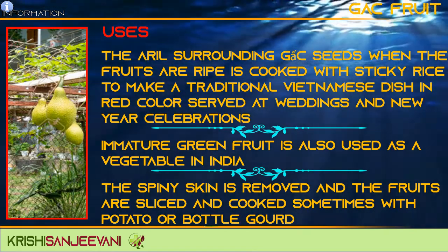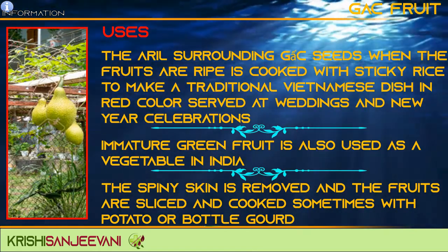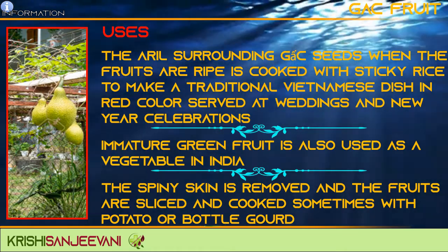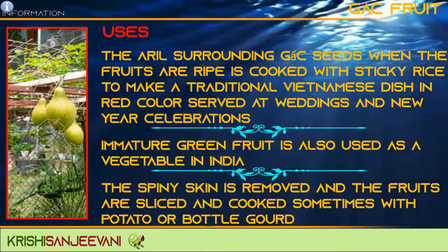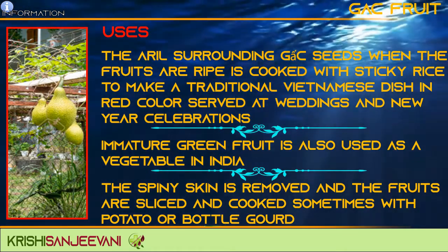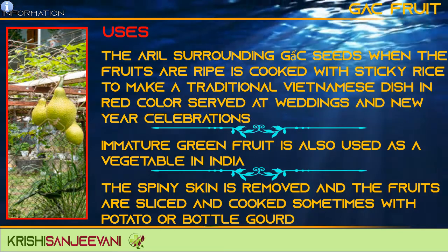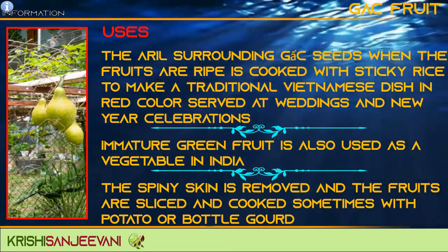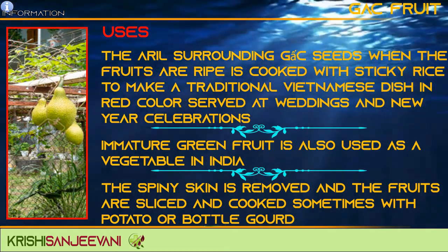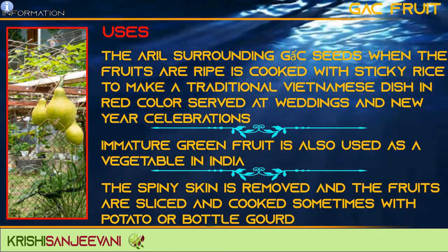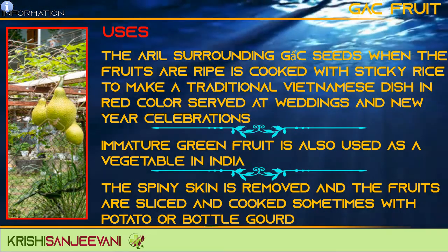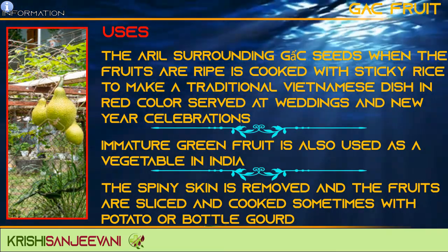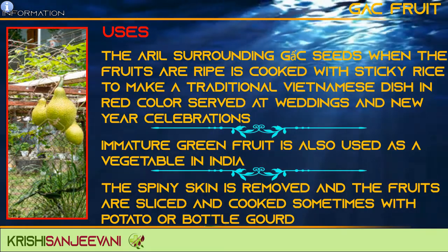The aril surrounding Gac seeds when the fruits are ripe is cooked with sticky rice to make a traditional Vietnamese dish, red in color, served at weddings and New Year celebrations. Immature green fruit is also used as a vegetable in India, where the spiny skin is removed and the fruits are sliced and cooked, sometimes with potato or bottle gourd.